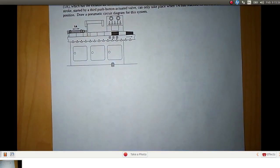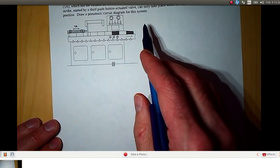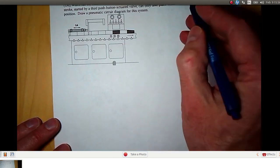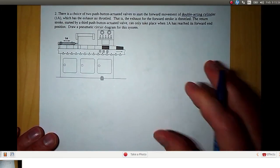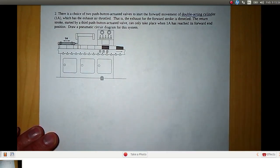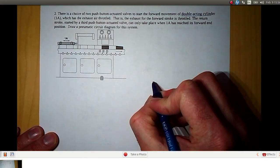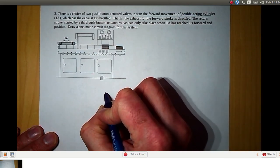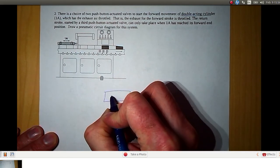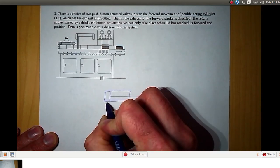Now the next problem is this design problem for a pneumatic circuit. We have a cylinder, okay so a double acting cylinder. A good place to start is with the actuator. So we have this double acting cylinder.